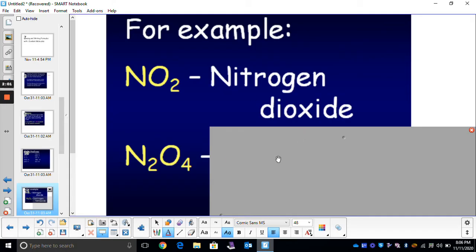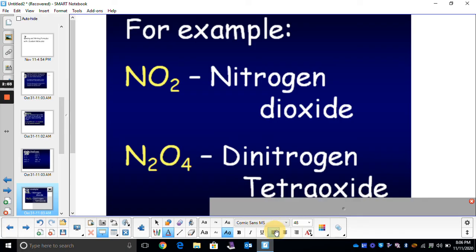But here, N2O4, that's dinitrogen tetraoxide. We have to label and say how many of each atom we have. We have to actually say the prefixes in our name for covalent bonding.